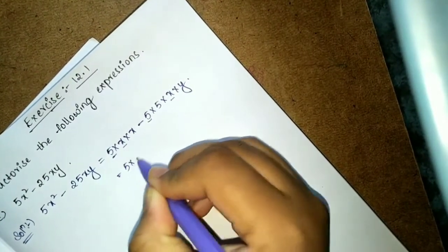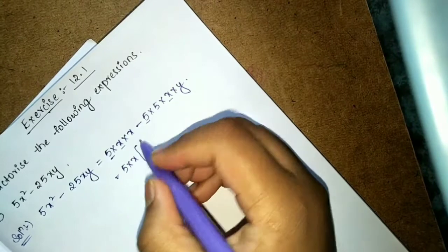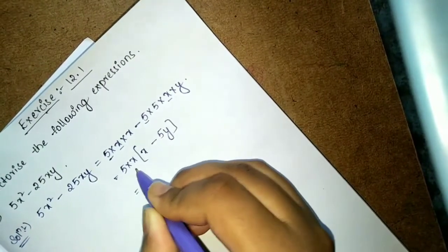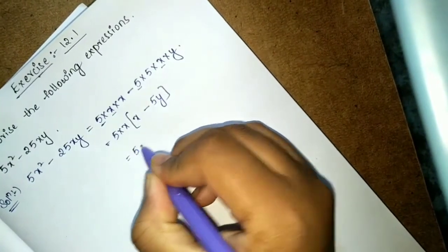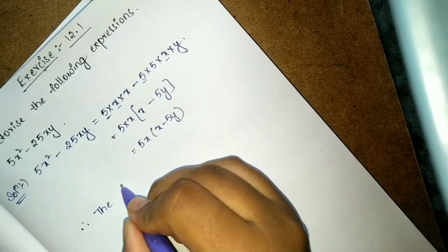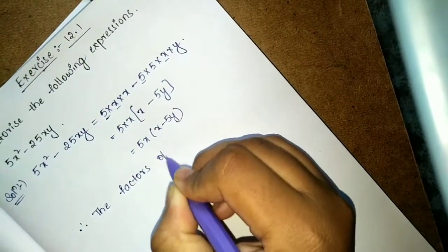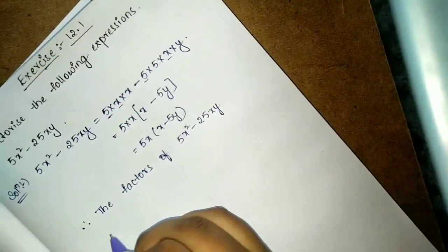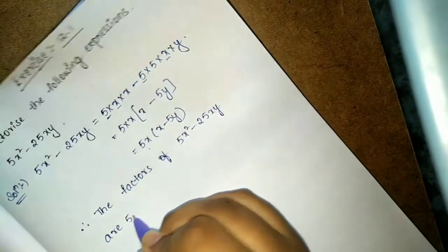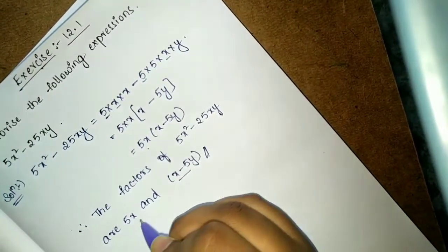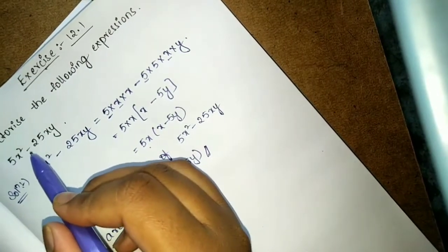So we take 5 × x common from these two terms. What we get here: 5x(x − 5y). So the factors of 5x² − 25xy are 5x and (x − 5y). These two are the factors of this algebraic expression.